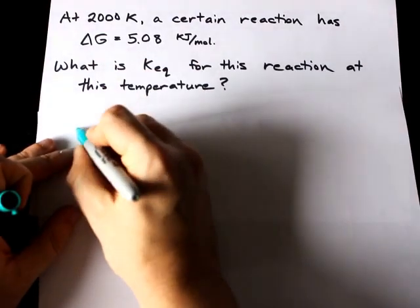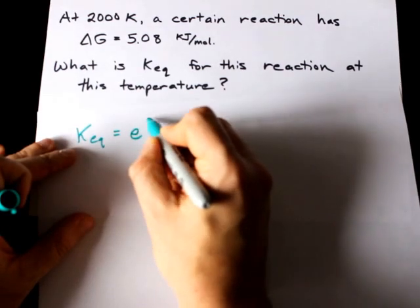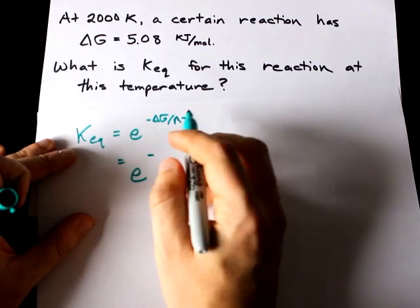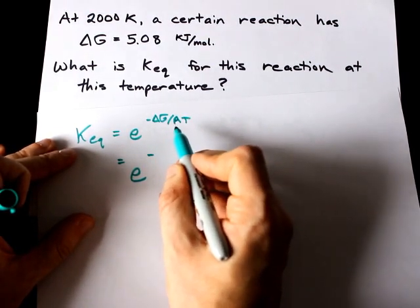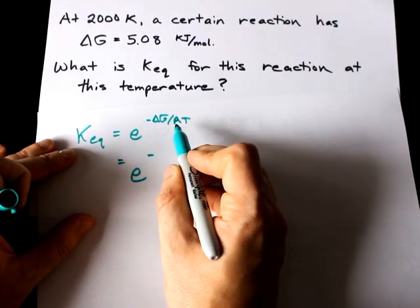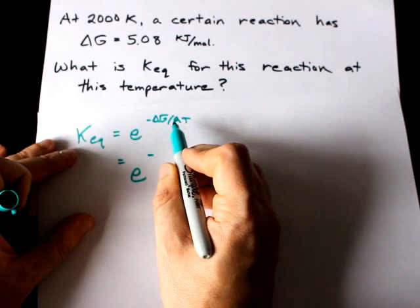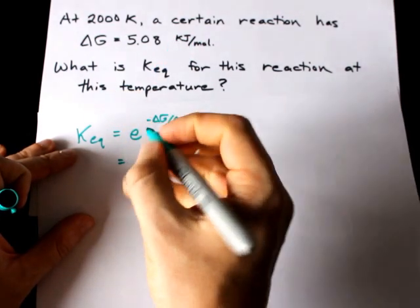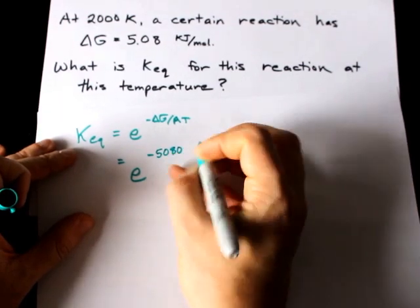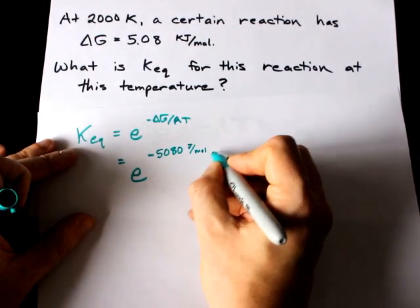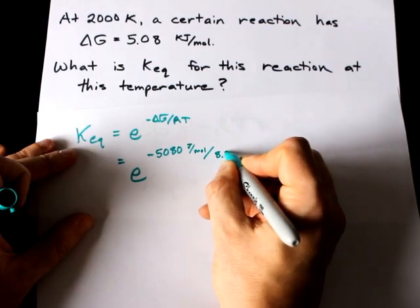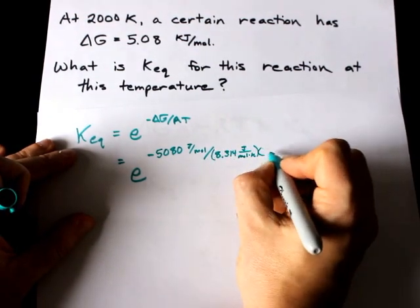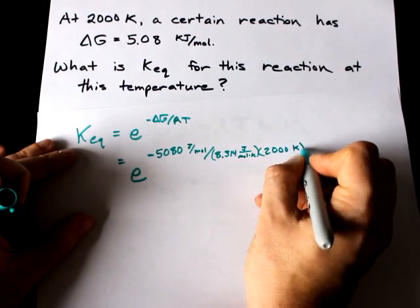We have KEQ equals e to the power of negative delta G over RT. The gas constant I'm familiar with is 8.314 joules per mole kelvin. So I want delta G in joules — it is currently in kilojoules, so I'm going to convert it. That's 5080 joules per mole divided by R which is 8.314 joules per mole kelvin, and in the denominator I also need the temperature in Kelvin which is 2000.